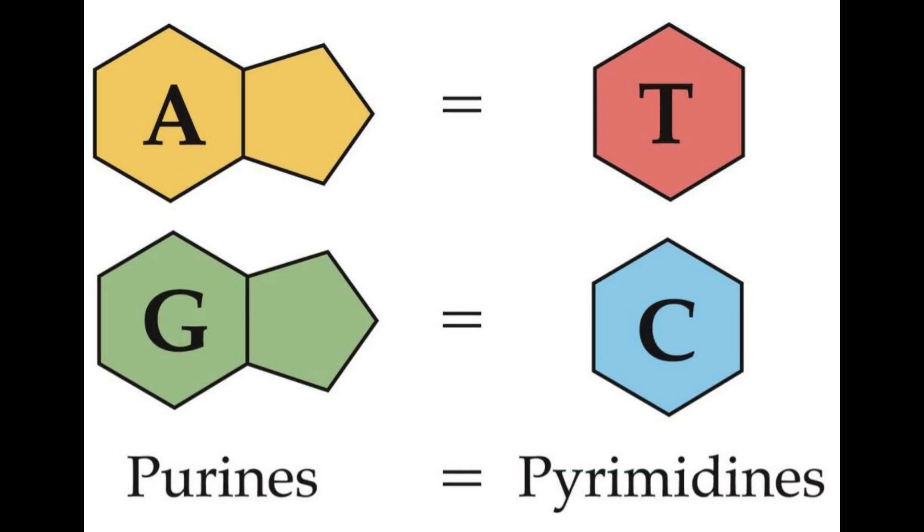These bases are sorted into purines and pyrimidines. The purines are adenine and guanine, which have two fused rings. The pyrimidines are thymine and cytosine, which consist of one carbon ring in their structures.